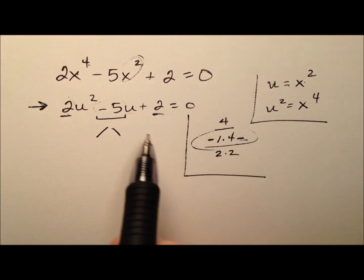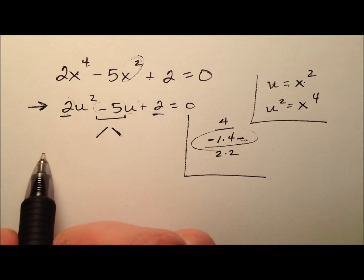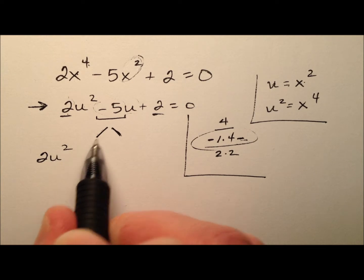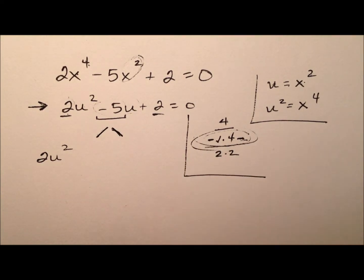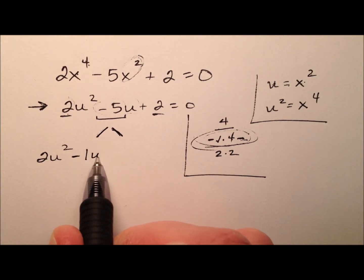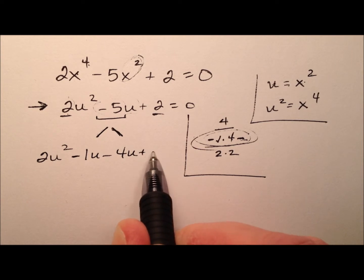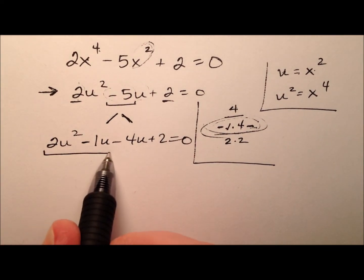We will split this middle term, this linear term, up into two like terms. I'll have 2u squared first. These two like terms will contain negative 1 and negative 4 as coefficients. So we'll say negative 1u minus 4u plus 2 equals 0. At this point, we can do factor by grouping.